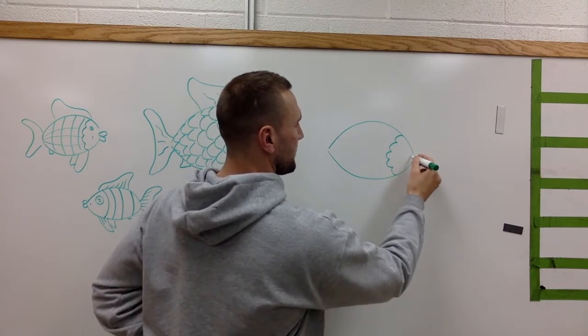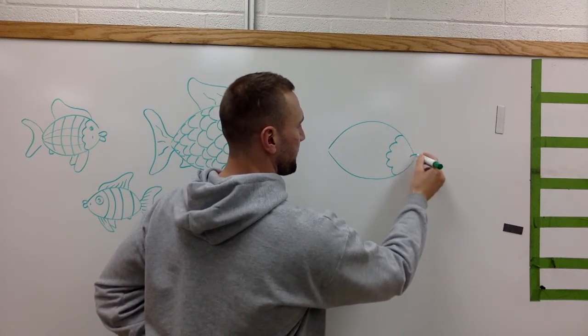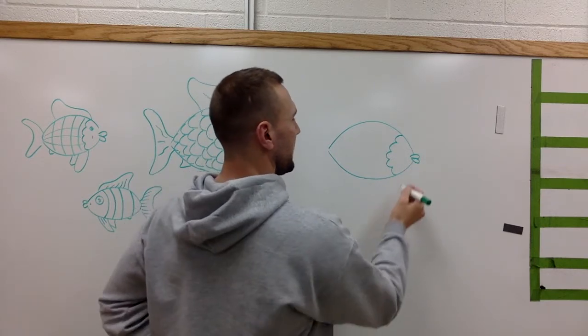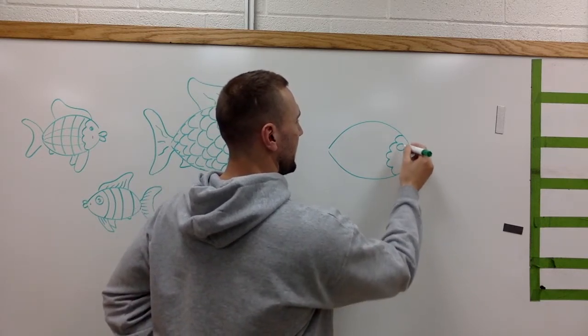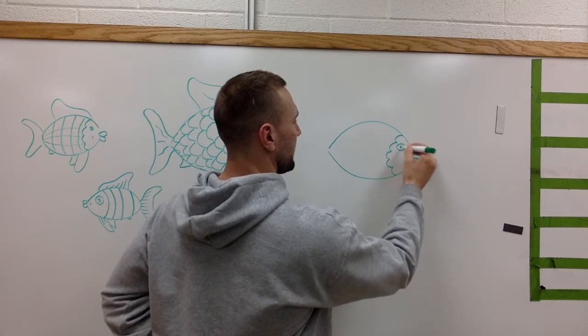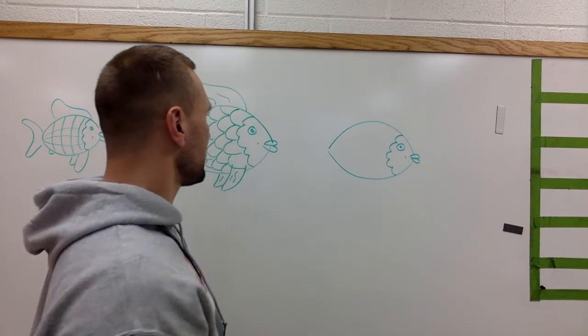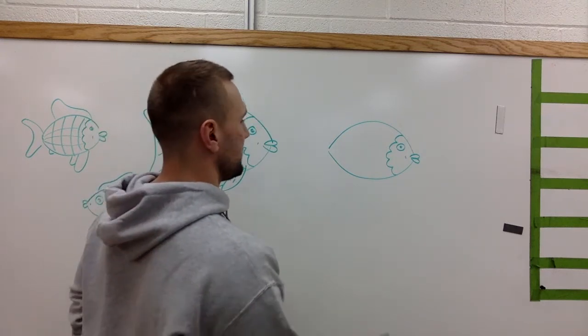I'm gonna add some lips and I'm just gonna make some little raindrop shapes like that. I like to make my eye a little bit bigger and I color the inside in, make a little dash there for its mouth, and I'm gonna go ahead and make some of the fins.